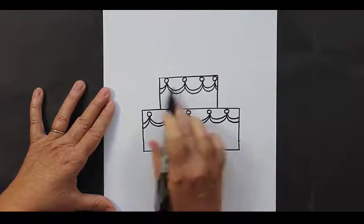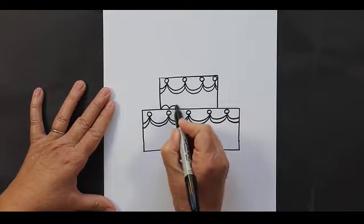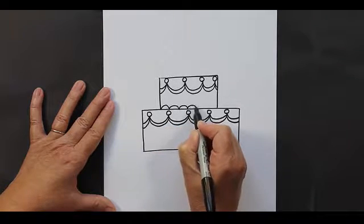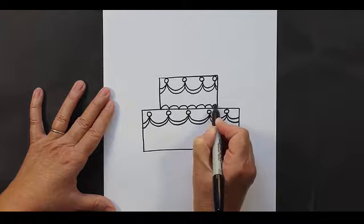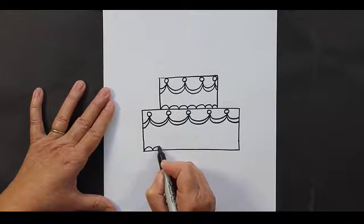Now I'm going to go up to the top tier of the cake, and I'm going to put some upside-down U's along the bottom, and do the same thing on the bottom tier.